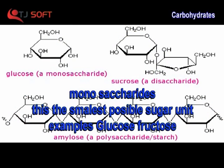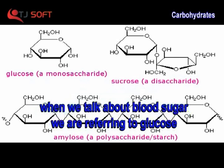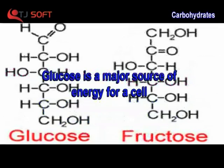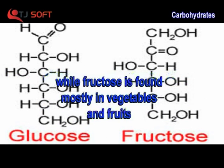Monosaccharides: this is the smallest possible sugar unit, e.g. glucose and fructose. When we talk about blood sugar, we are referring to glucose. Glucose is a major source of energy for a cell, while fructose is found mostly in vegetables and fruits.